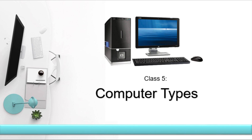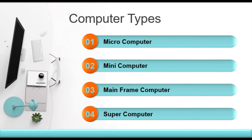In the main program, we have four types of computers: microcomputer, minicomputer, mainframe computer, and supercomputer. We are going to start with the microcomputer.